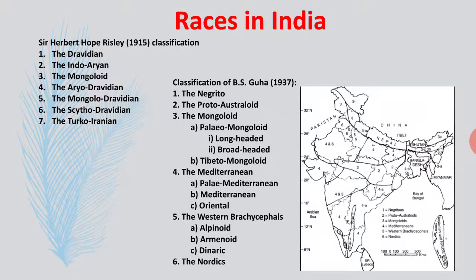Coming to India, different scholars have given different racial classifications. Sir Herbert Hope Risley in 1915 classified Indian races into seven categories: Dravidian, Indo-Aryan, Mongoloid, Aryo-Dravidian, Mongolo-Dravidian, Scytho-Dravidian and Turco-Iranian. Another classification was given by B.S. Guha in 1937, and the map is also shown here.